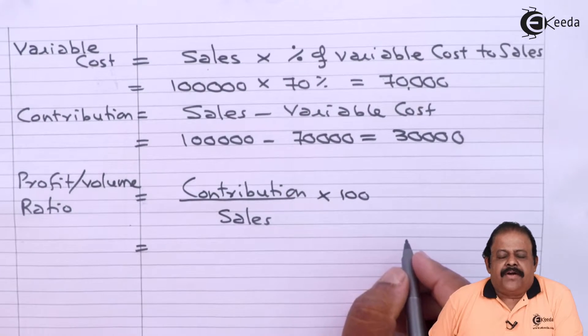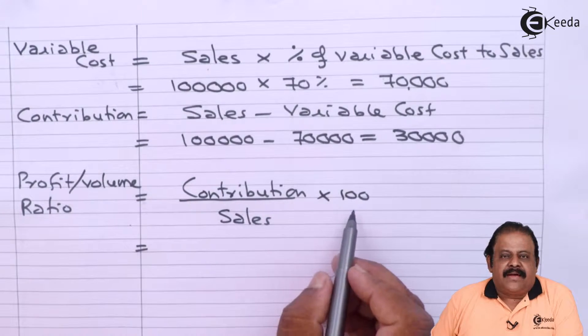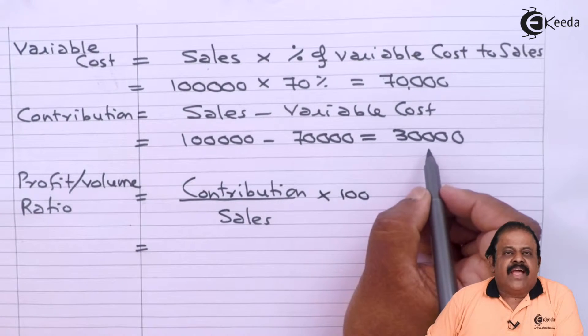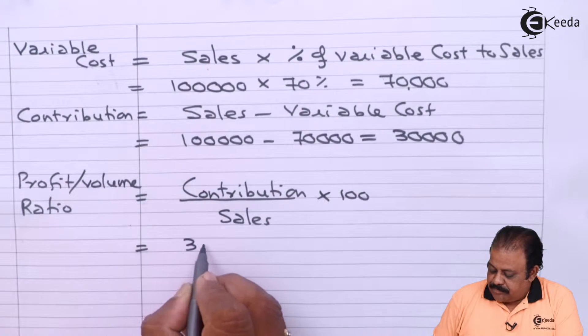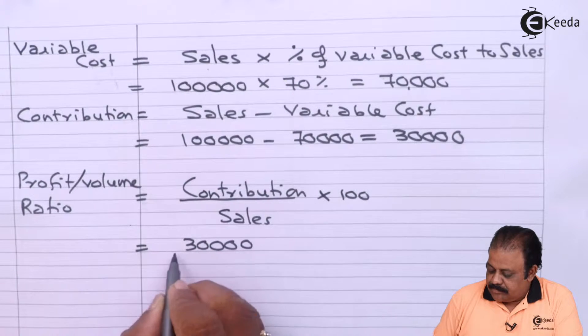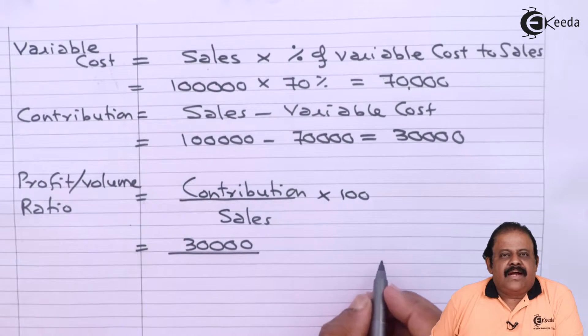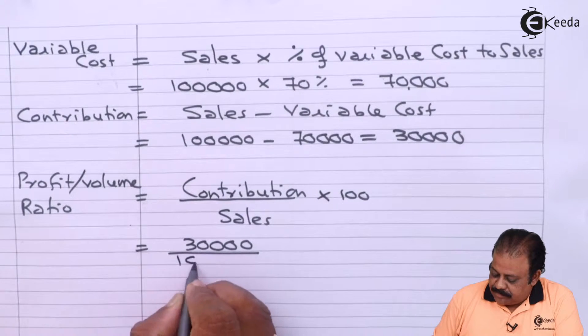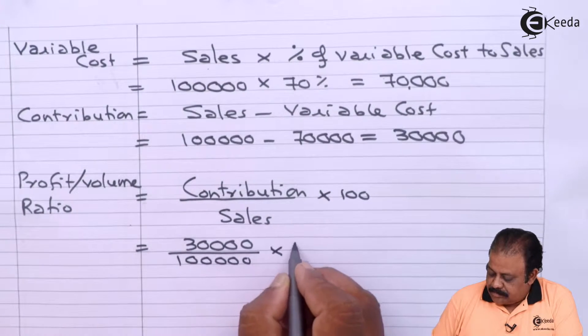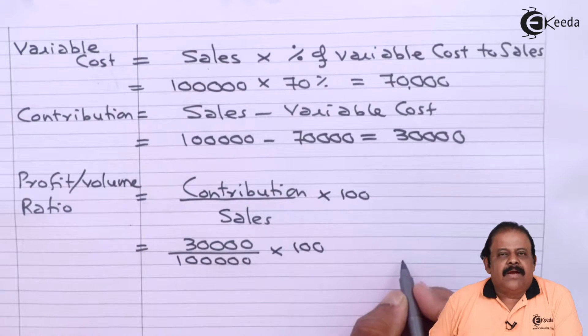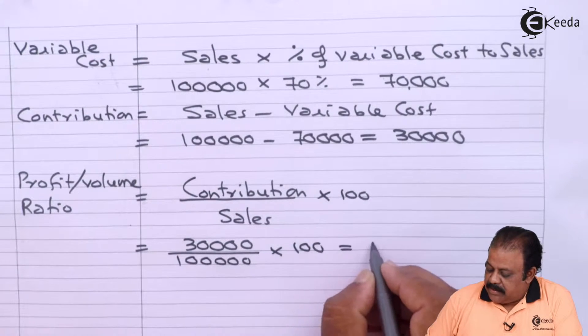PV ratio is contribution upon sales multiplied by 100. Contribution we have 30,000 divided by sales 1 lakh, multiplied by 100. So it will be 30 percent.